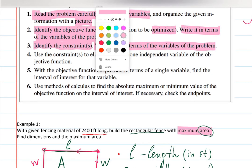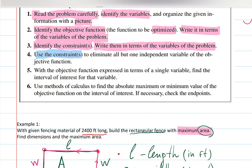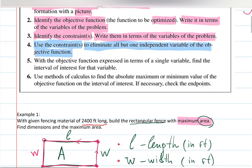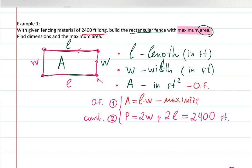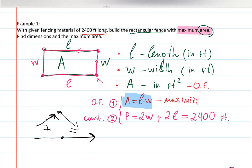Now the calculus part: use the constraint equation to eliminate all but one independent variable from the objective function. We have area = L × W, with two variables. We know how to maximize a single-variable function — take the derivative, set it to zero, find critical points, and use the first derivative sign line or second derivative test. But with two variables, we can't differentiate directly in Calculus 1.